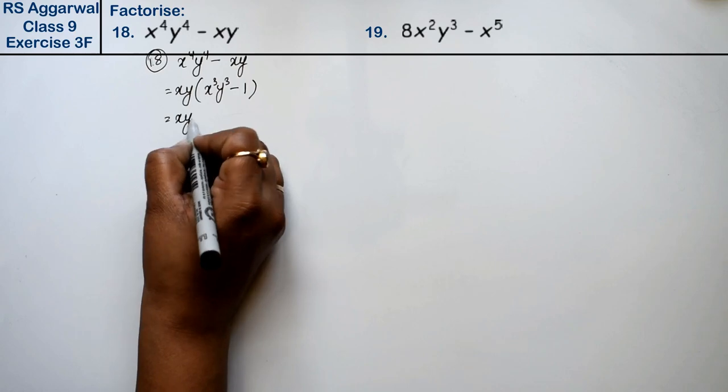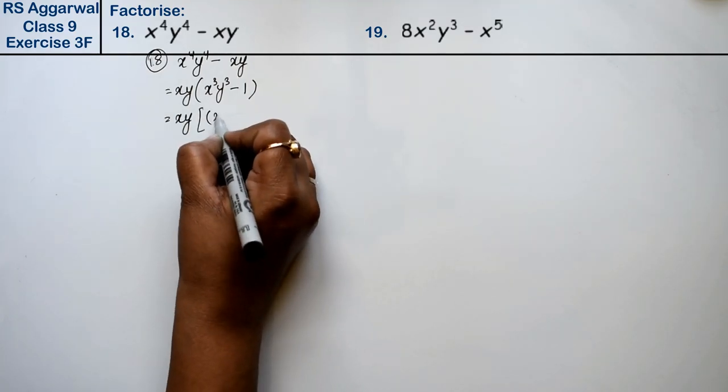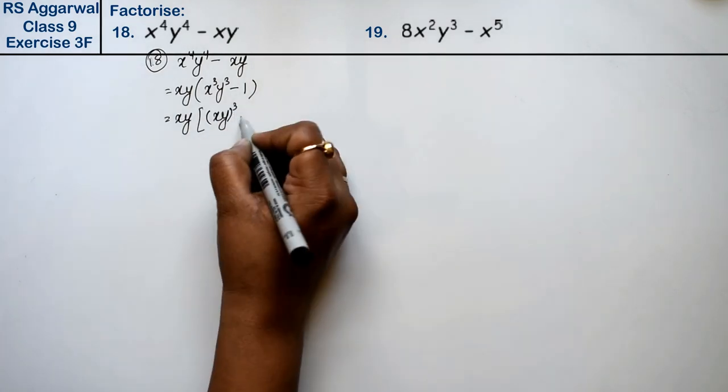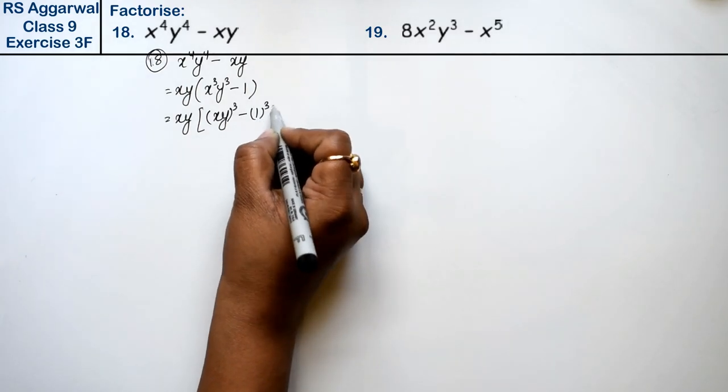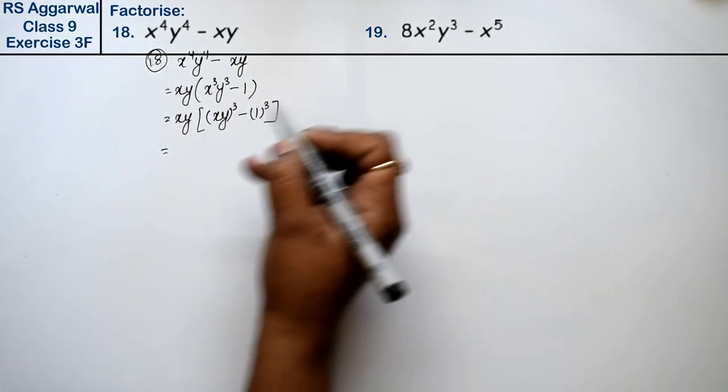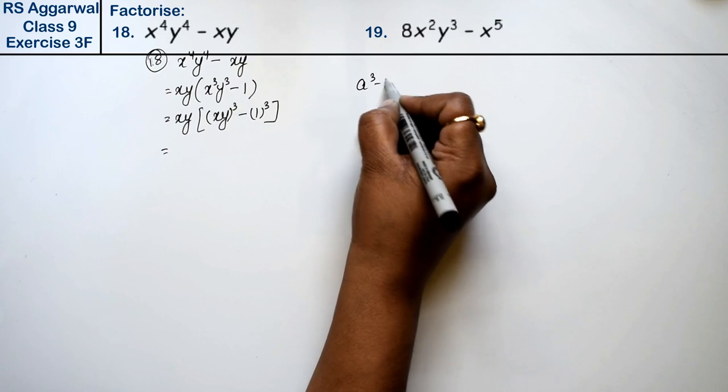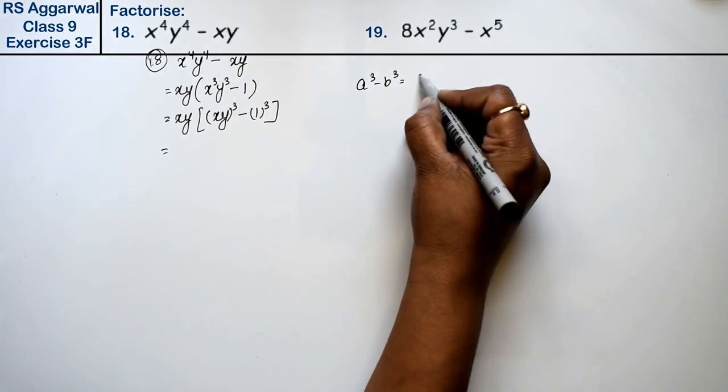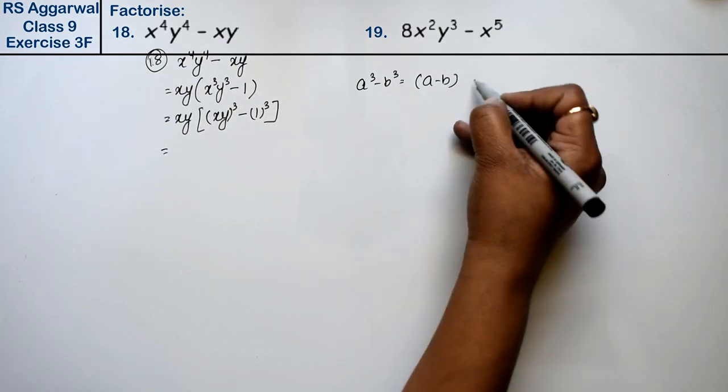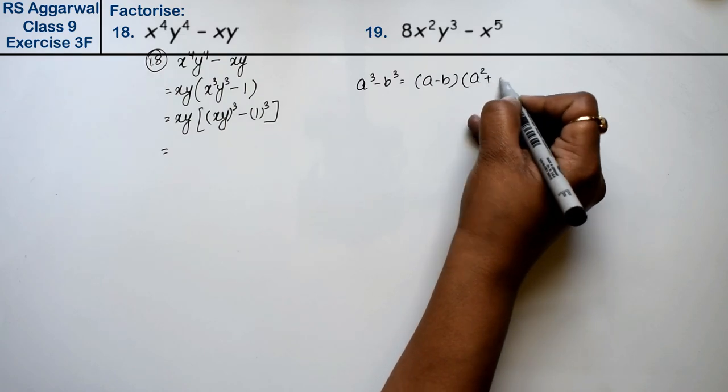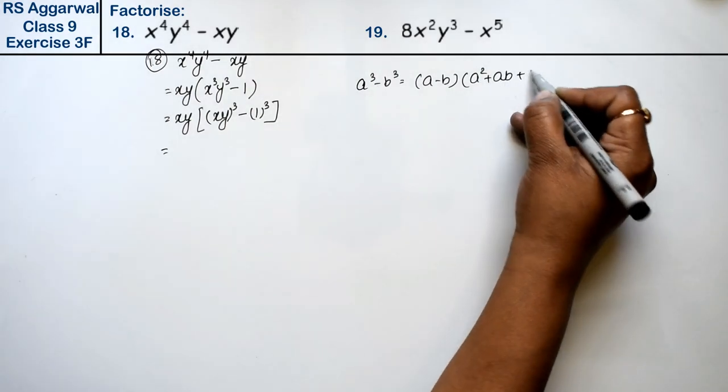This is xy. What can we write? xy's whole cube and we can write 1 to 1 to 1. Then see, a cube minus b cube formula, that is a minus b, a square plus ab plus b square.